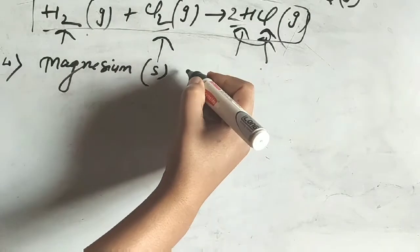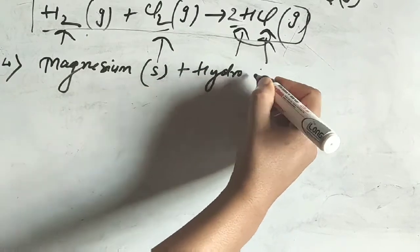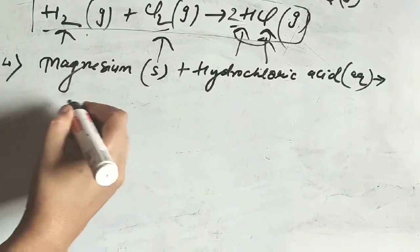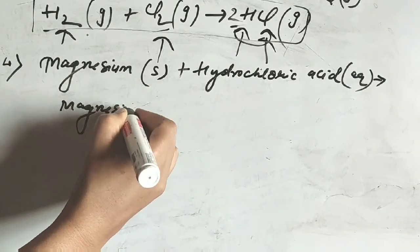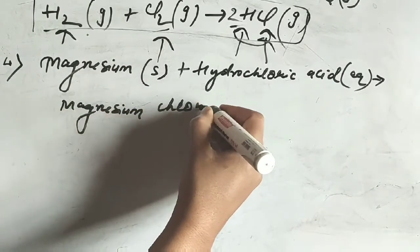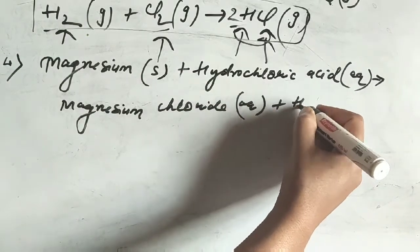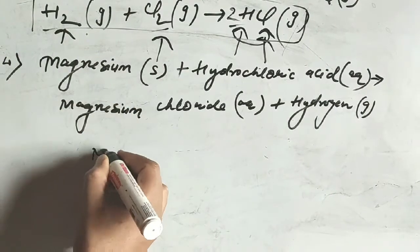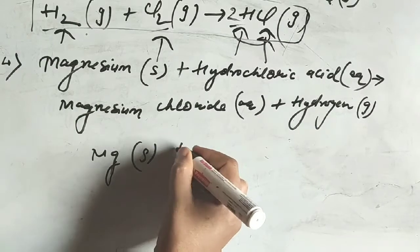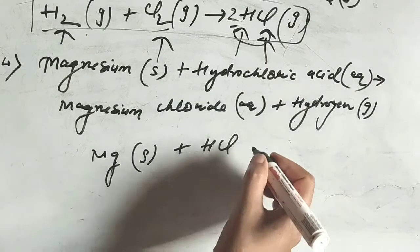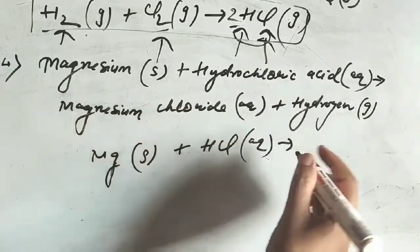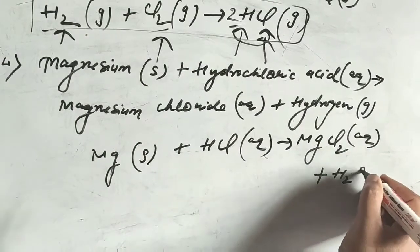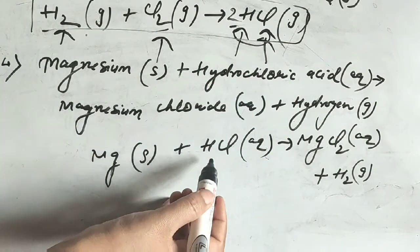Next question: magnesium solid plus hydrochloric acid in aqueous form gives magnesium chloride in aqueous form plus hydrogen gas. The symbol of magnesium is Mg in solid form. Hydrochloric acid is HCl in aqueous form, giving magnesium chloride MgCl₂ in aqueous form plus H₂ gas.